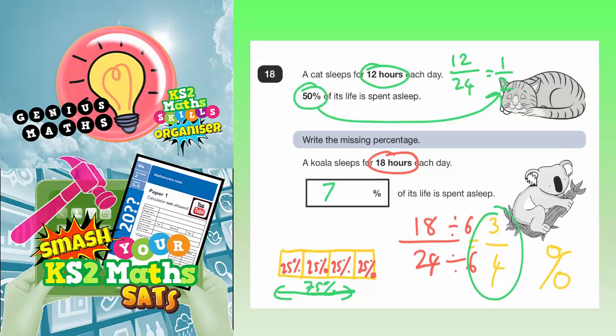So 75%, and that comes from the fact that 75% is the same as 3 quarters, and 3 quarters is an equivalent fraction to 18 out of 24, and the koala bear sleeps for 18 hours in a day out of a possible 24 hours in a day.